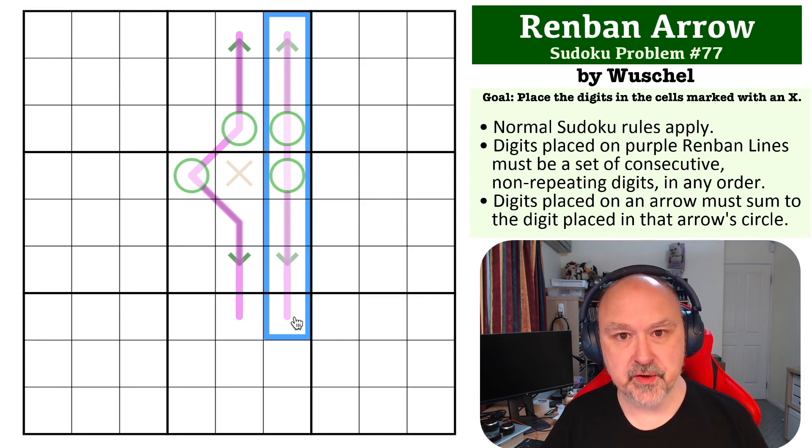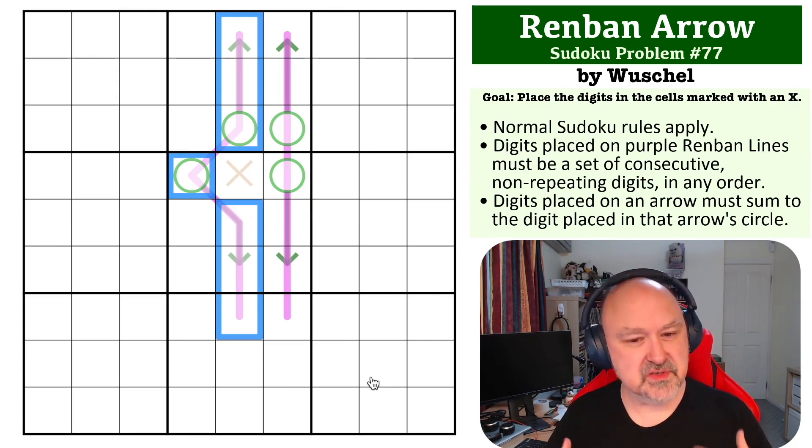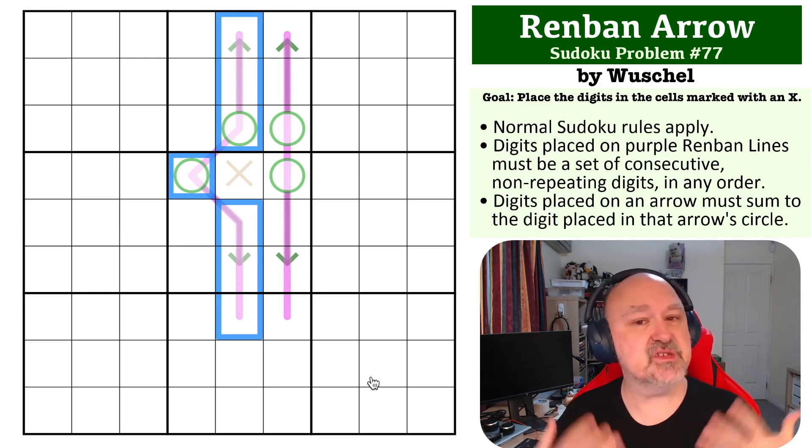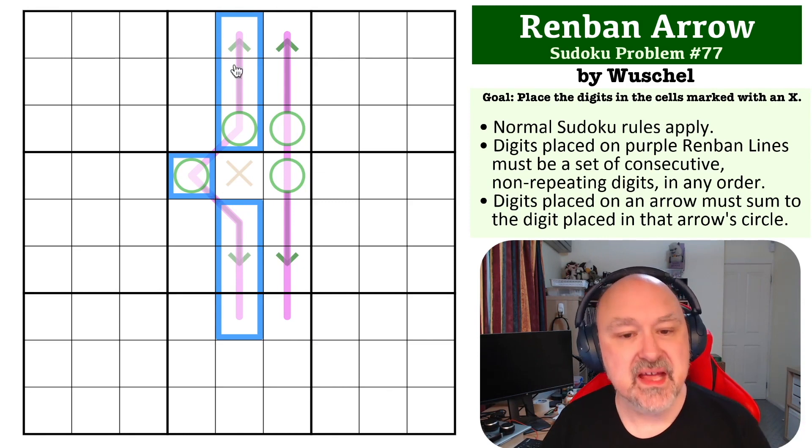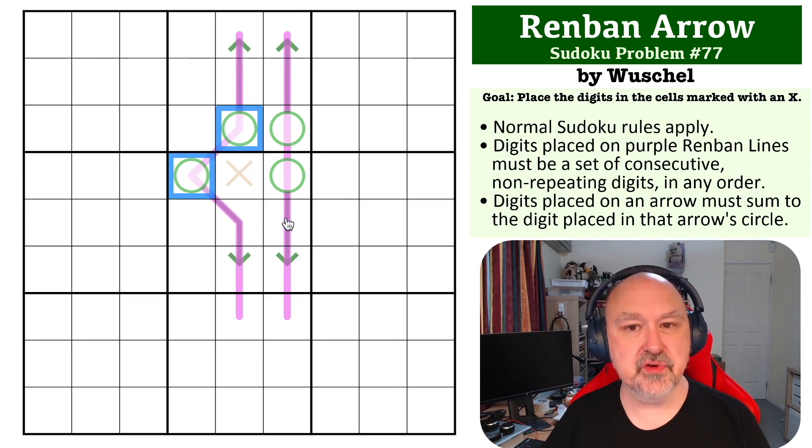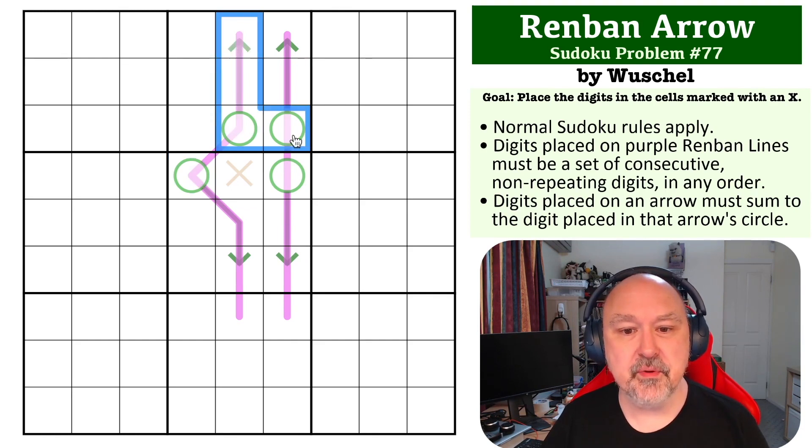Now that's important to remember. Now we need to look at this renban line. This renban line looks like it's different because it's not straight, but because you can't repeat digits on a renban line, it's exactly the same. They may as well all be in the same column. If you were to put a nine on this renban line, then the minimum digits you could put on these arrows would be three, four, five, and six, which is 18, and you would have to put two nines in those arrows, which is doable by Sudoku, but you'd then be repeating the nines on the renban line, which is not doable.